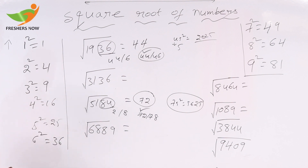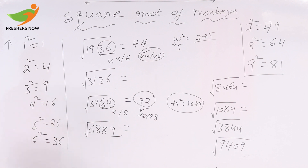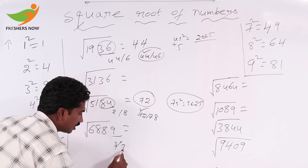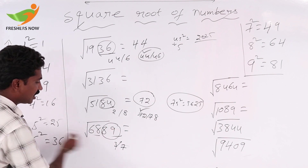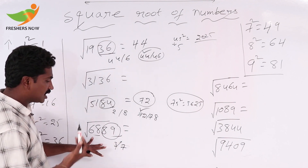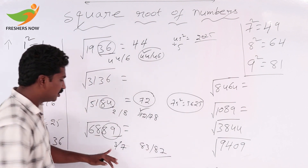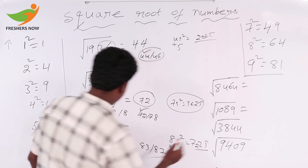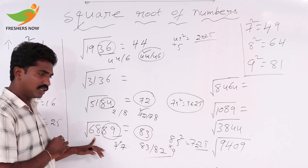Square root of 6889. Units place value is 9. 3 squared is 9 and 7 squared is 49, so we can take either 3 or 7. Keep 2 digits away: 68 is there. 8 squared is 64 and 9 squared is 81, so we take 8. The answer is either 83 or 87. In between these two, 85 is there. 85 squared: 5 squared is 25, and 8 times the next number 9 gives 72. 68 is less than 72, so we take 83. Square root of 6889 is 83.